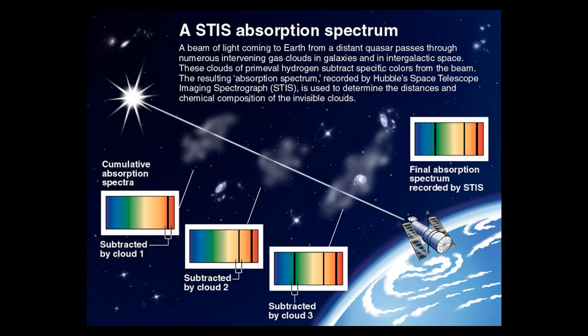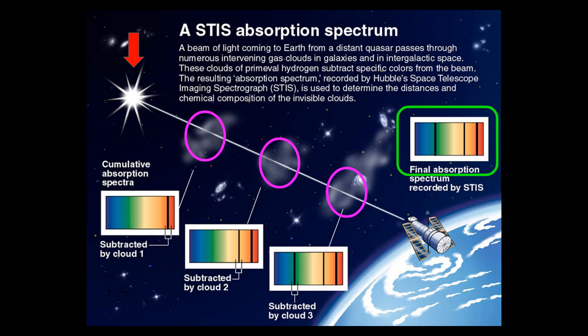Here's the way to understand this concept. You have a bright star off in the distance and its light is shining through some clouds. It passes through a cold gas cloud and that subtracts some light. The second cloud it passes through subtracts another. And the third gas cloud subtracts yet another. These could all be hydrogen or they could be different elements — maybe helium or something else. The final result is an absorption spectra where three different gas clouds have removed light, producing those dark bands.